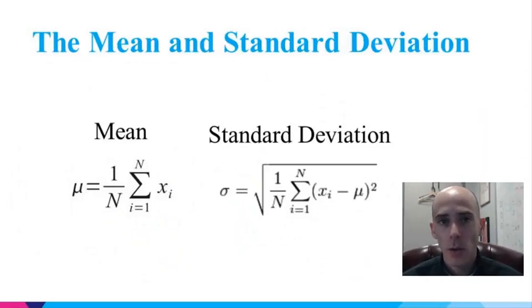So first, how do we quantify the center of the data and the spread of the data? This can be computed using the mean and standard deviation. The mean is simply a sum of all of the values, the repeated values that were measured, divided by the number of measurements.